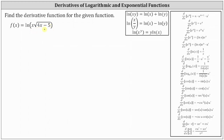But notice that to determine u prime and apply the chain rule, we would also have to apply the product rule. Instead of taking that approach, we are going to use the log properties shown here on the right to expand natural log of x times the square root of the quantity four x minus five.